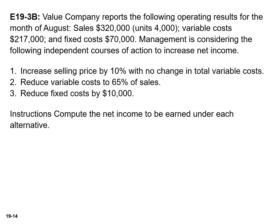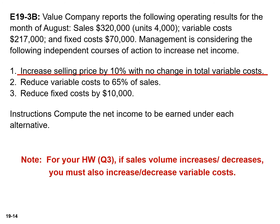This exercise is similar to what we've been doing. One important point: in this scenario we're increasing selling price by 10%, but there's no change in total variable cost — similar to the first scenario we looked at. When doing your homework for question number three, if sales volume increases or decreases, you must also increase or decrease variable cost. I hope the concepts we reviewed in this section are now very familiar to you. After you complete this exercise, we'll examine additional ways that companies use CVP analysis to assess profitability and to help in making effective business decisions.